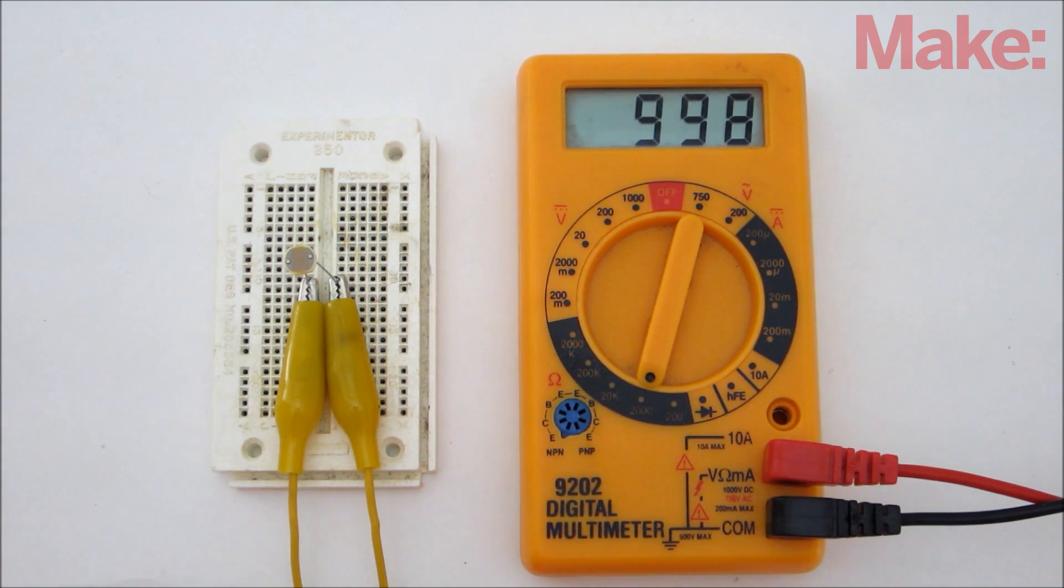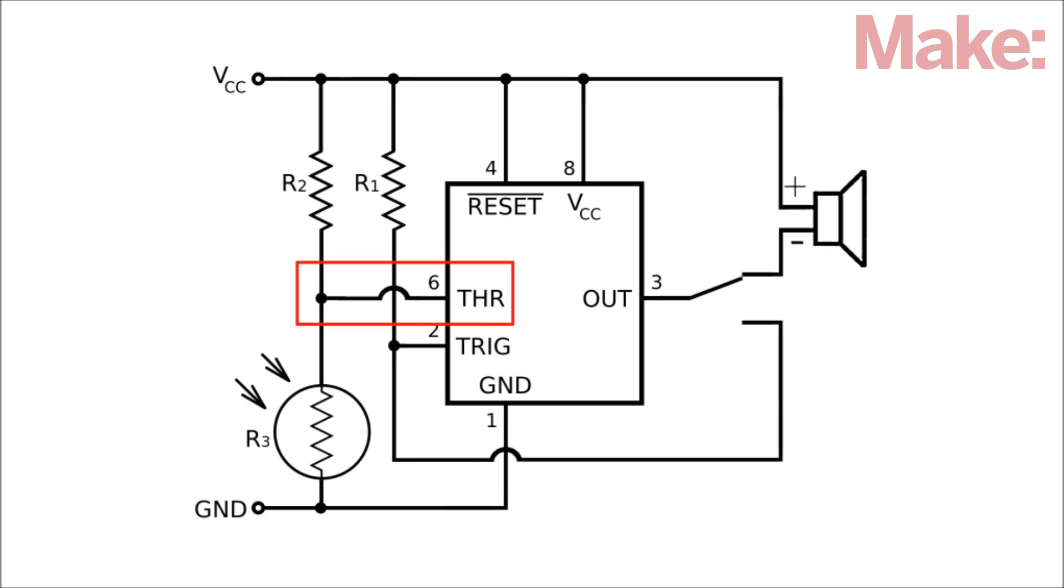When the light beam is interrupted, the resistance of the photoresistor increases and the voltage at pin 6 goes above the reference threshold. This causes the output at pin 3 to go low and activates the alarm.